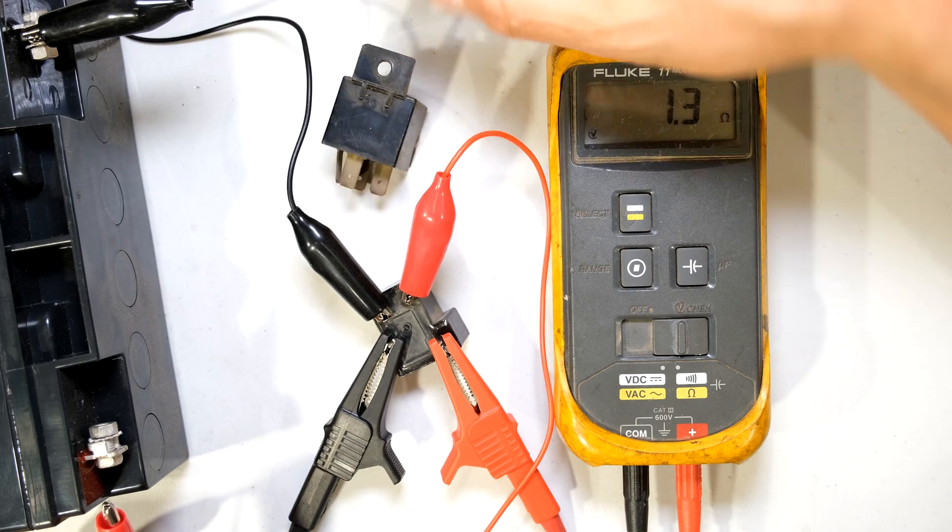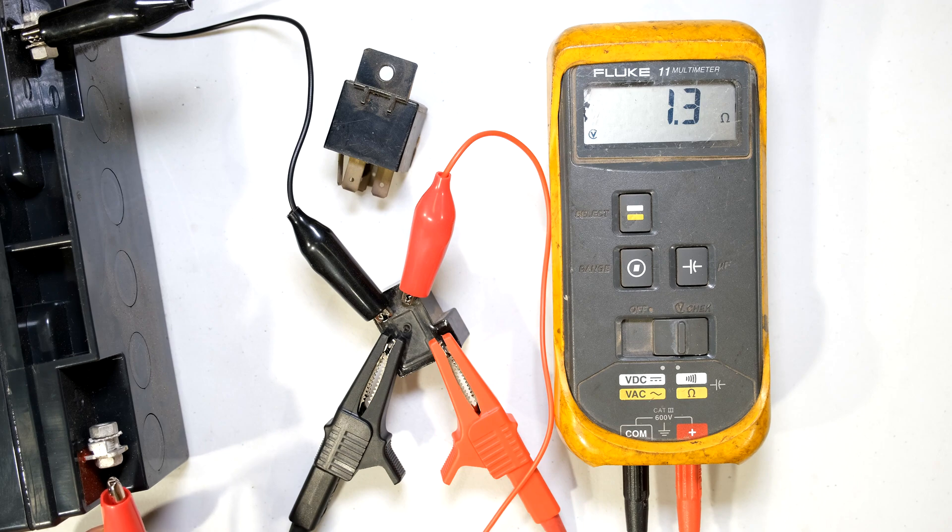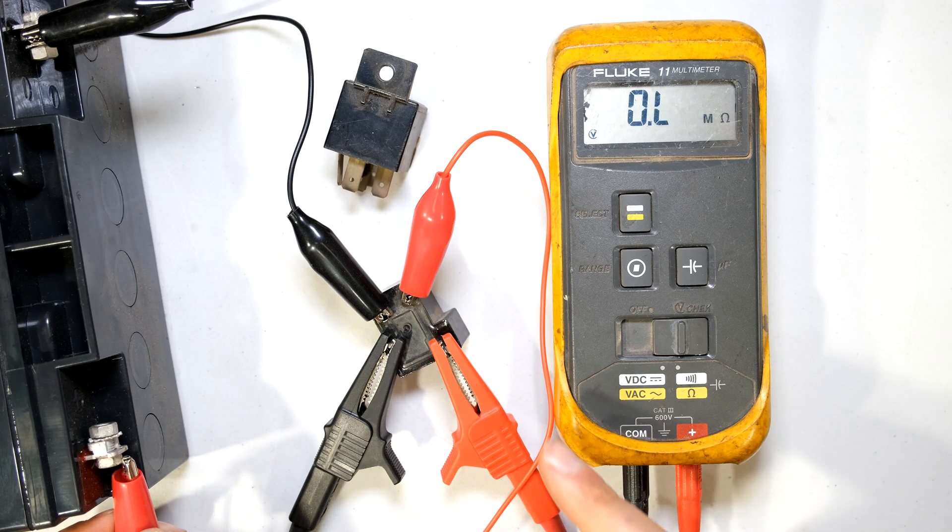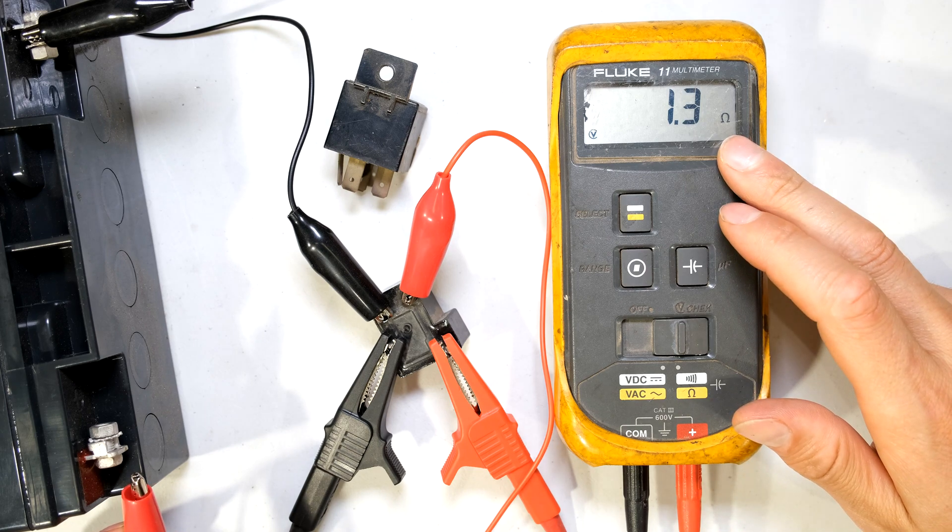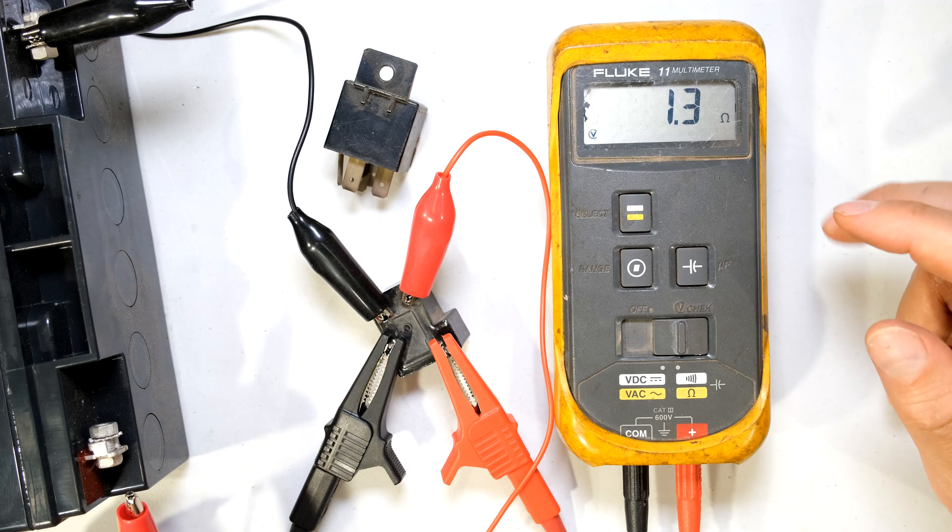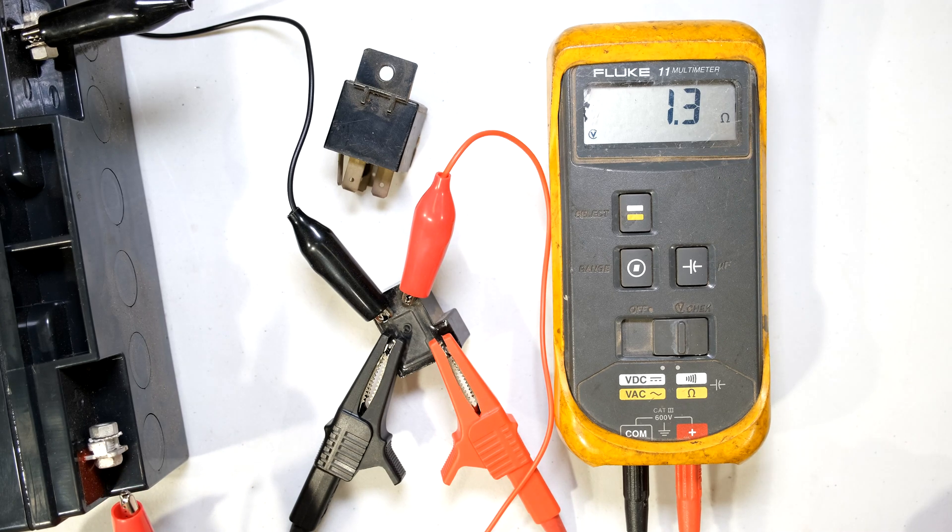So in this case this automotive relay works differently to this one. This one was normally open while this one was normally closed. In order to open this relay I have to activate it. So that is how I know this relay is working. Firstly I can hear the sound. Secondly I can see on my meter that the contactors are working. If for example I activated the relay and this did not change. Then I would know the relay was faulty.